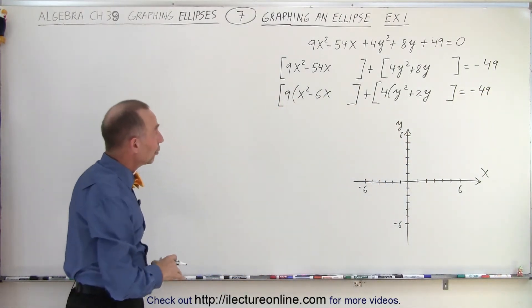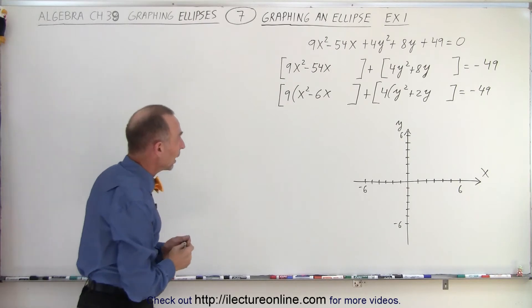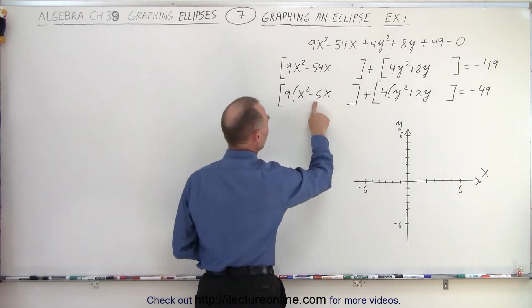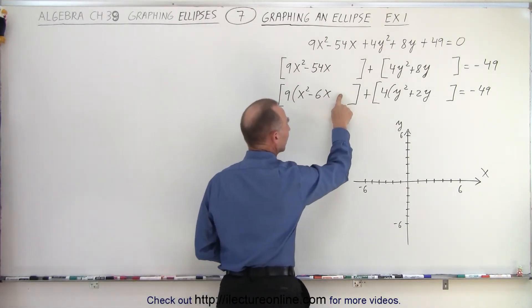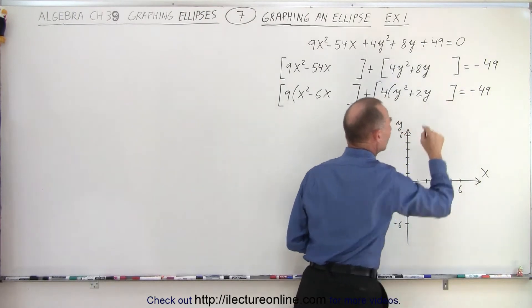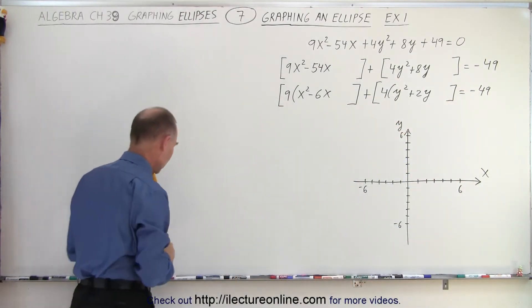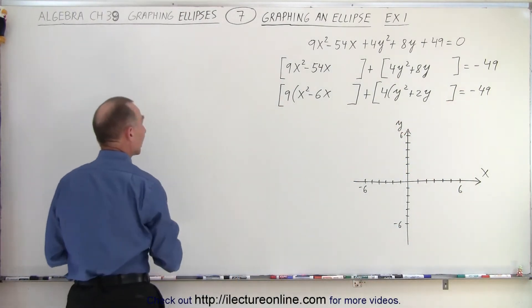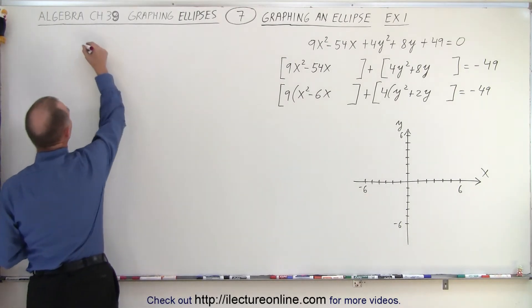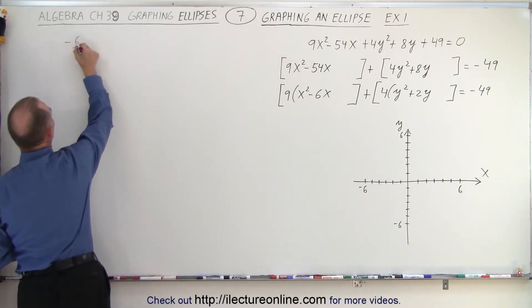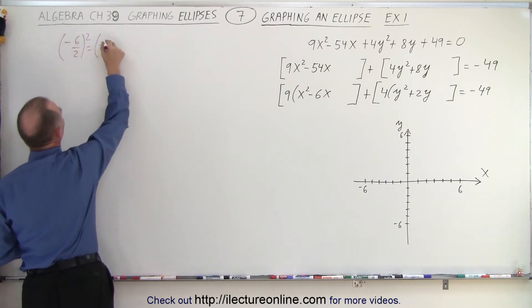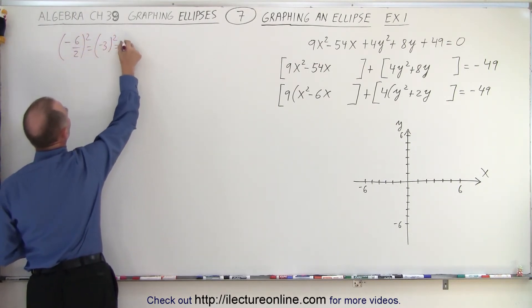And now we can go ahead and complete the square. To do that, we take half the middle term squared and add it here. Of course, if we add it here, we must add it there as well. We need to do it for both x and y, but let's do it on the side so we see how that's done. So here we take the middle term minus 6 divided by 2 and we square that, which is equal to minus 3 squared, which is equal to 9.